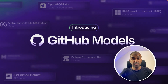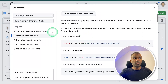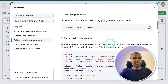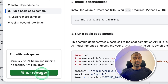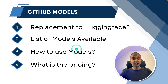One place to access many different models — that is GitHub Models. It has its own playground to test these models. You can integrate it with your own application using their SDK, and you can use this in Code Spaces directly without any authentication. Is this a replacement to Hugging Face? What models are available? How do you use and integrate them? What is the pricing? That's exactly what we're going to see today. Let's get started.